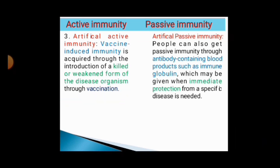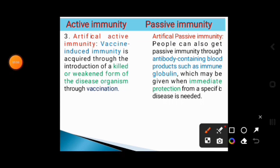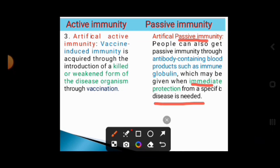Artificial passive immunity occurs when a person is introduced to antibody-containing blood products, such as immunoglobulin, which may be given when immediate protection from a specific disease is needed.